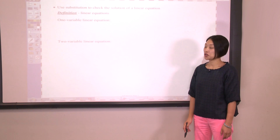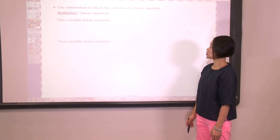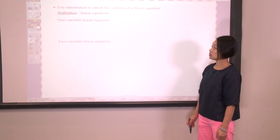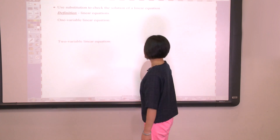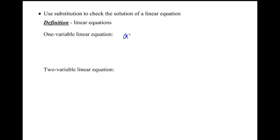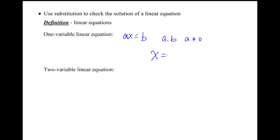In this video we're going to talk about how to use substitution to check the solution of a linear equation. For a one-variable linear equation, its standard form is ax equals b, where a and b are real numbers and a cannot be zero. It has the form of a solution x equals c, where c is a real number.